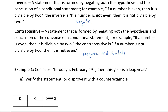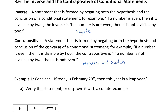What students often end up making a mistake on is that they know that for the contrapositive you negate and then switch. But sometimes you forget that what you're doing is you're actually switching the conditional statement and negating that. So always go back to your conditional to make sure you did the right switch.